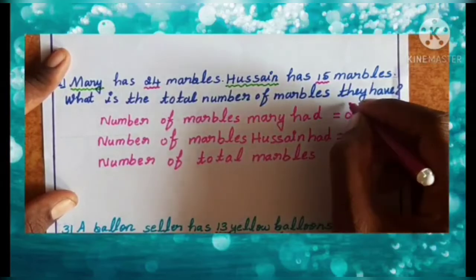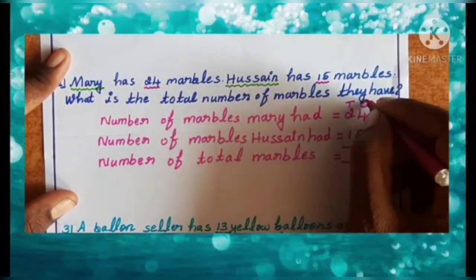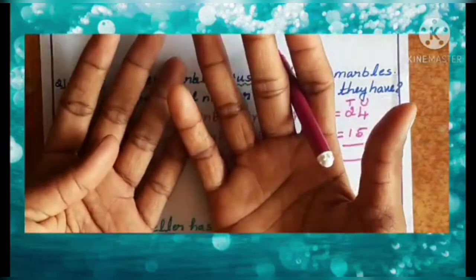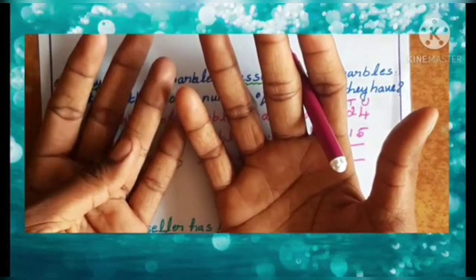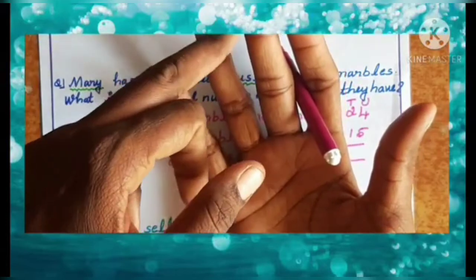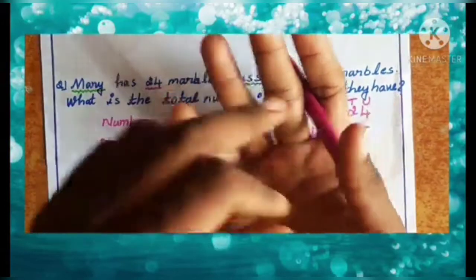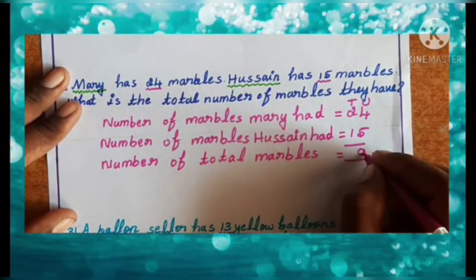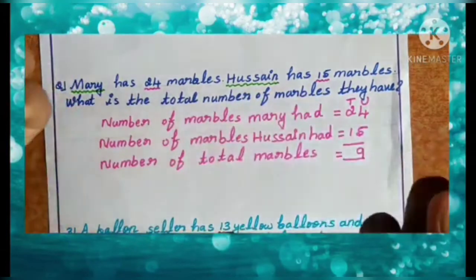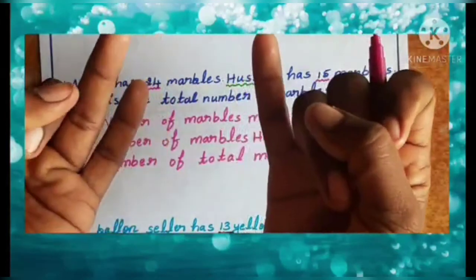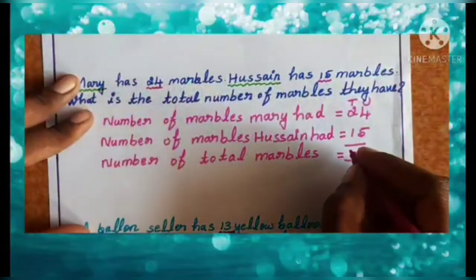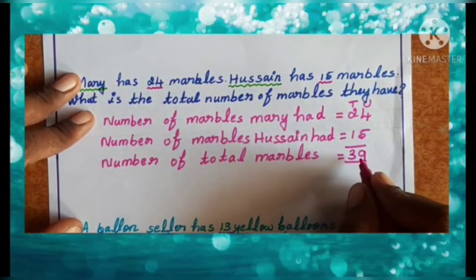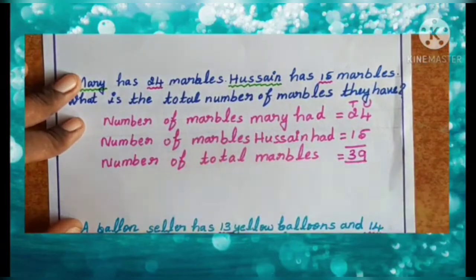First, add units — write tens and units. 4 plus 5. Count now: 1, 2, 3, 4, 5, 6, 7, 8, 9. So 4 plus 5 is 9. Next, 2 plus 1. Count: 1, 2, 3. So 2 plus 1 is 3. Total 39 marbles.